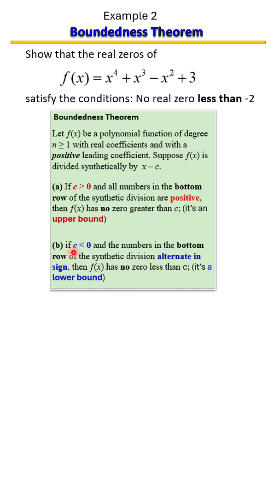When we're given a number that's less than zero, what we're looking for in synthetic division is that all the numbers in the bottom row alternate in sign. When that happens, it means that this function has no zero less than negative two.